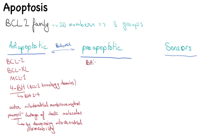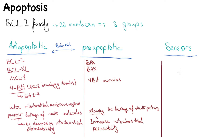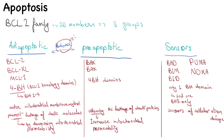BAX and BAK are two principal members of the pro-apoptotic group. They also possess four BH domains; however, they increase outer mitochondrial permeability, allowing the leakage of death proteins such as cytochrome c — exactly the opposite of the anti-apoptotic group. The sensors — whose major members include BAD, BIM, BID, PUMA, and NOXA — contain only one BH domain, the third one (BH3), and are often called the BH3-only proteins. They act as sensors of cellular stress and damage and regulate the balance between the other two groups.